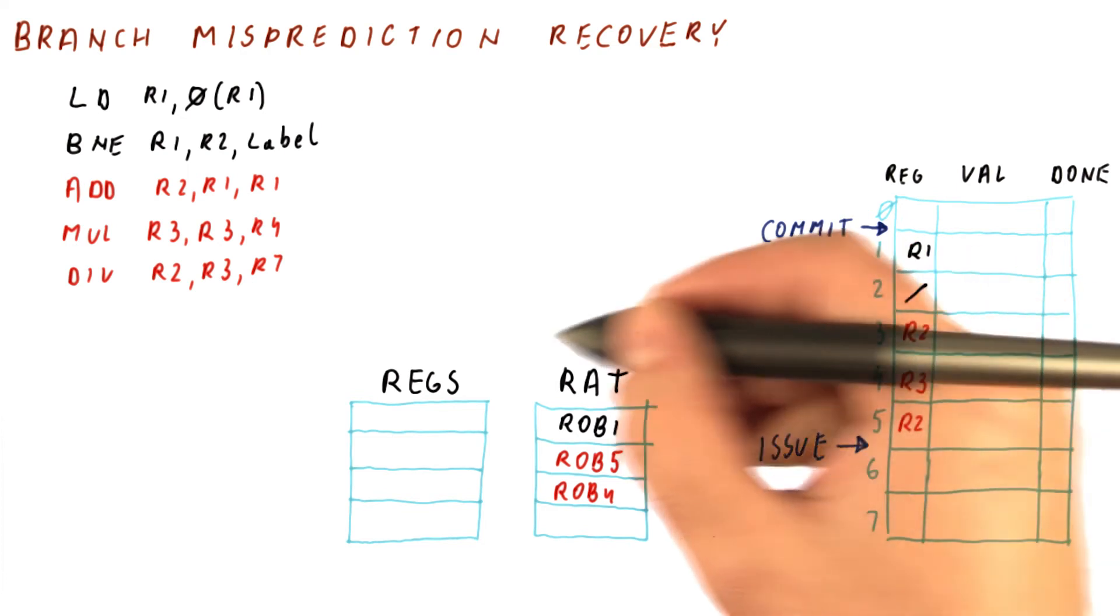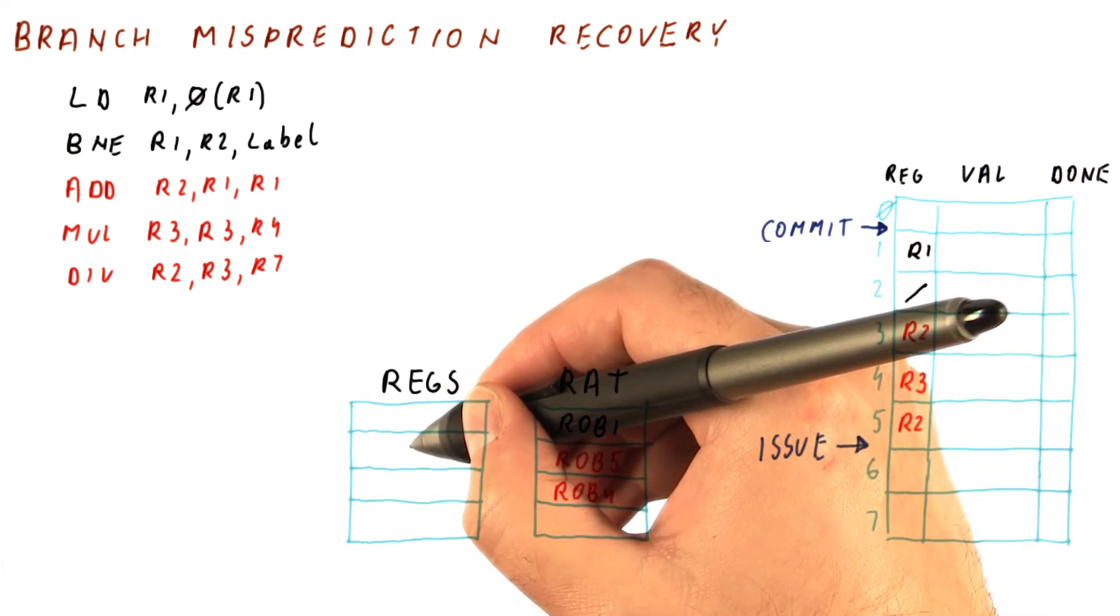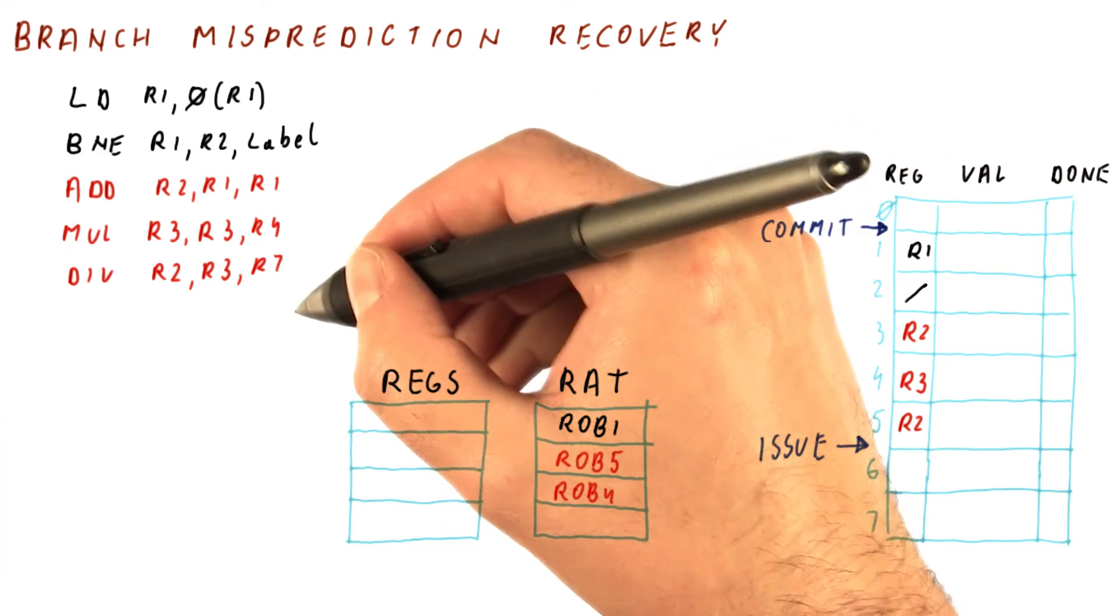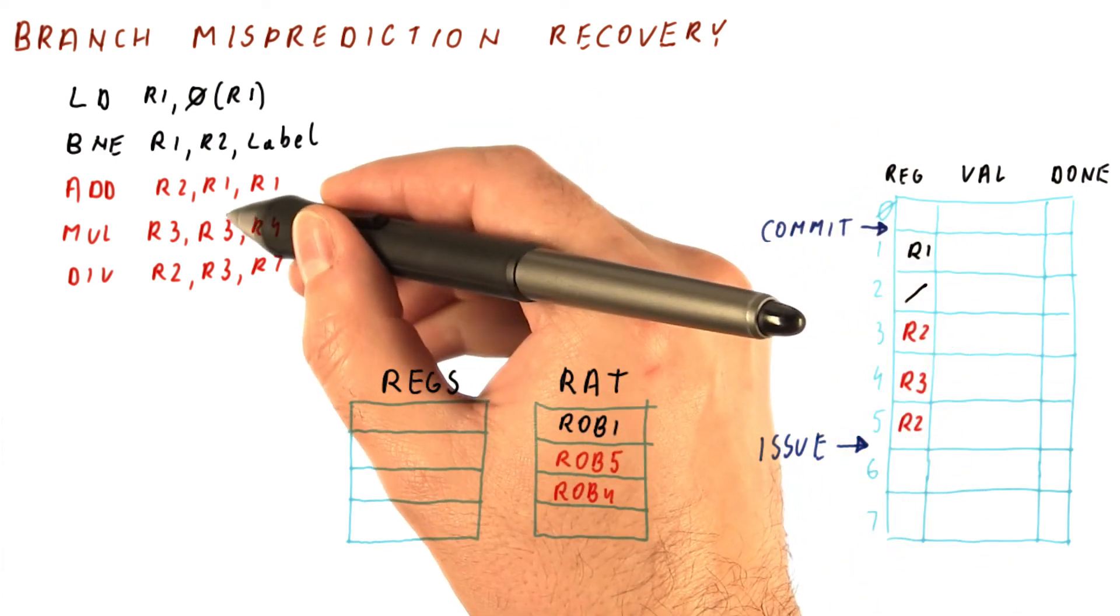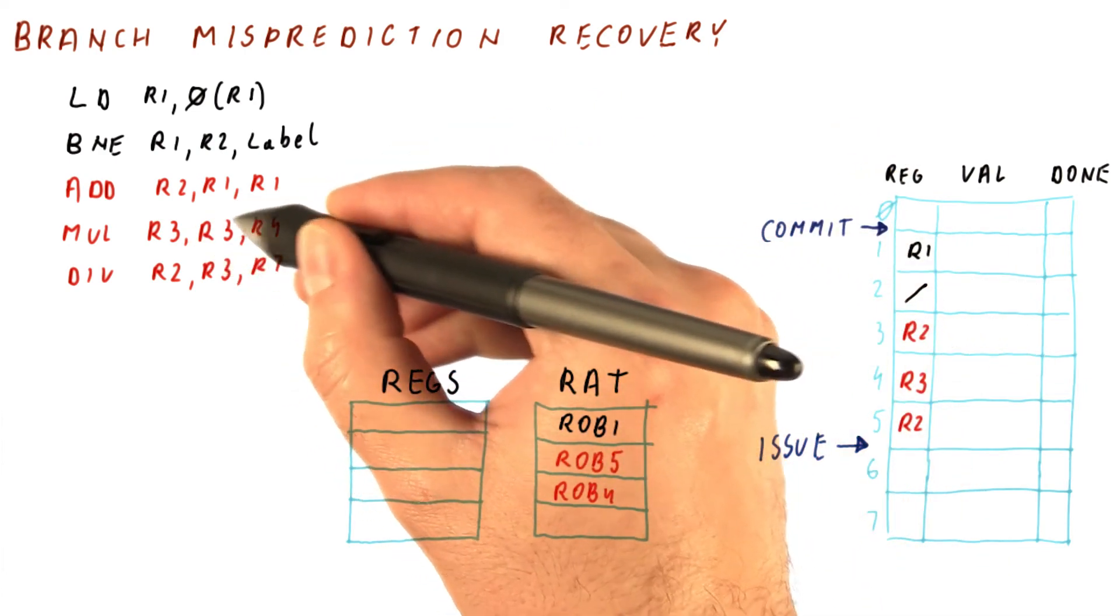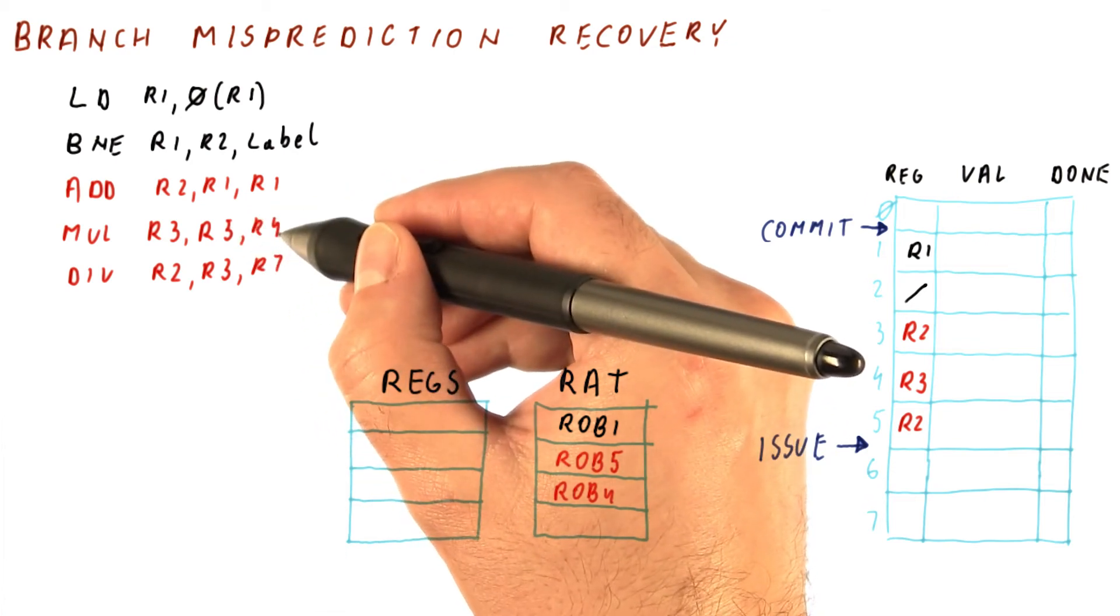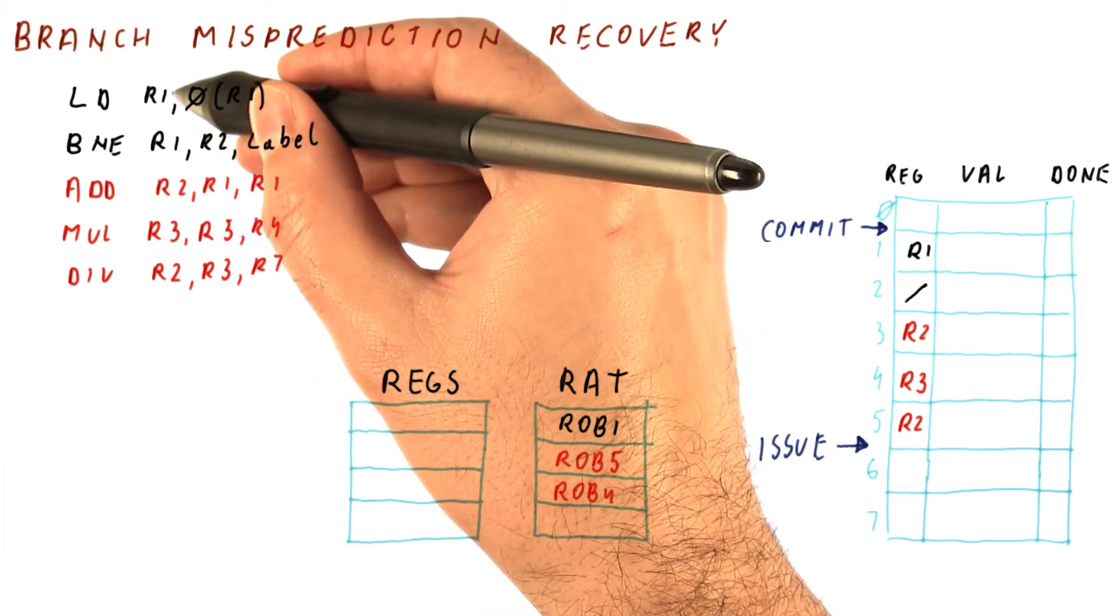And originally, it would write it to the registers. And at that point, after the branch misprediction, but this multiply can compute its value because R3 and R4 might be ready. They're not produced by any of the previous instructions.